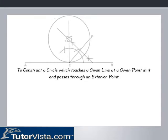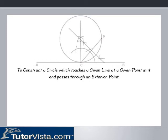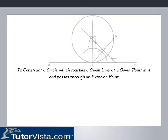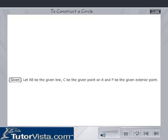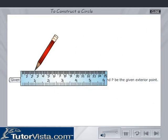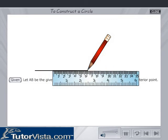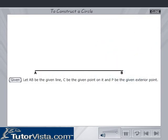To construct a circle which touches a given line at a given point in it and passes through an exterior point, let AB be the given line, C be the given point on it, and P be the given exterior point.